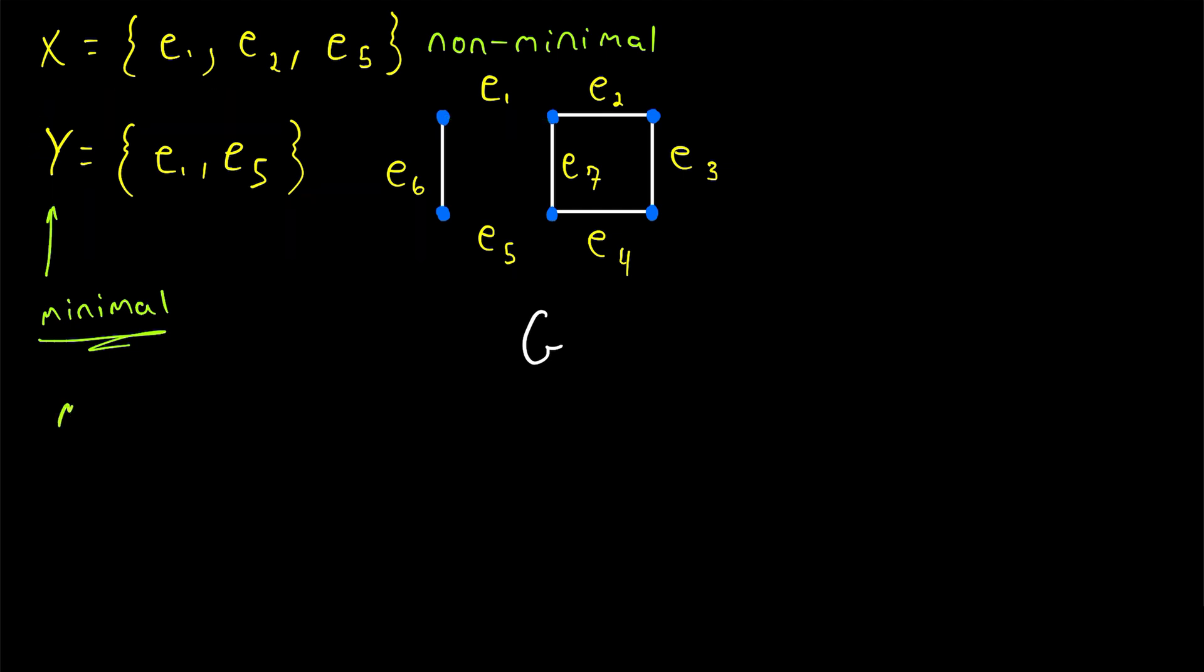Furthermore, Y is what's called a minimum edge cut. This is because there does not exist any other edge cut in the graph that has fewer edges than Y. There is an edge cut with just as many edges. If we delete the edge E2 and the edge E4, that disconnects the graph, and it's only two edges. So a minimum edge cut does not have to be unique.